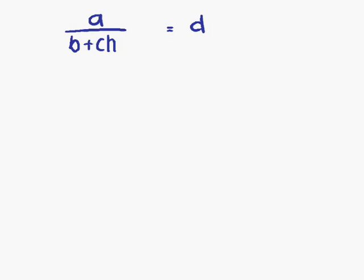The best thing to do first of all is treat this thing as one thing for the moment. That will allow us to move it onto the right-hand side. At present, we have B plus CH dividing on the left. If we move it onto the right, then it's going to multiply. So A equals D times B plus CH.